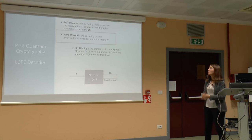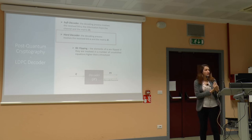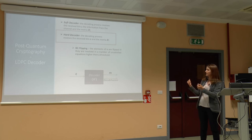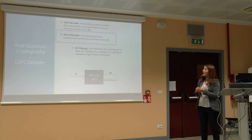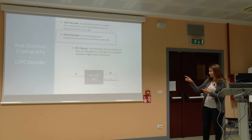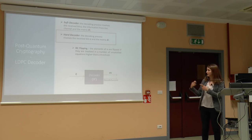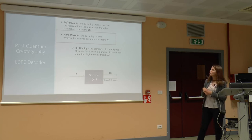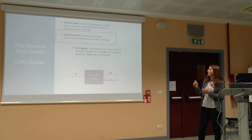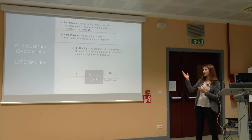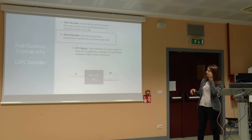For what concerns the decoder of an LDPC code, we have two options. One is a soft decoder, in which the information received includes the statistics of the error and the matrix H. The hard decoder requires just the received vector and the matrix. The soft decoder requires fewer iterations of the algorithm and works better, but its complexity is huge compared to the hard decoder, which requires less information and has simpler structures to evaluate the position of the errors.